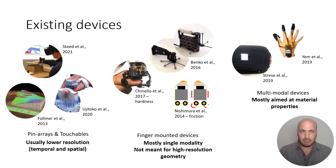There are countless existing haptic devices. For displaying geometric information, large rounded devices that emulate 3D surfaces were suggested. These surfaces allow full hand exploration, but in most cases at low resolution and therefore are not suitable for complex surfaces. Wearable pin arrays with similar capabilities have also been suggested. Finger-mounted devices that emulate a small section of the surface while tracking finger movements were mostly aimed at a single modality such as hardness or friction, and were not designed to display high-resolution geometric information.